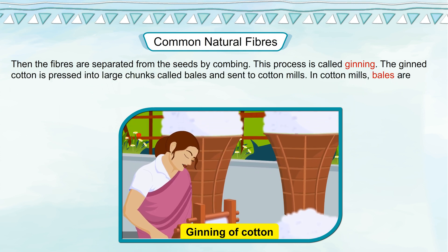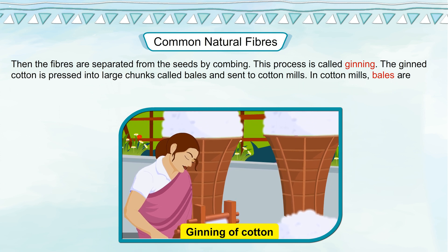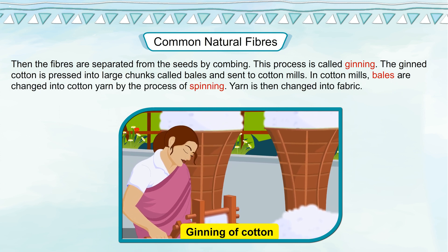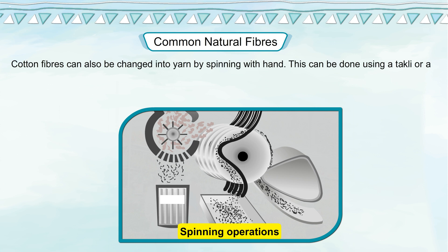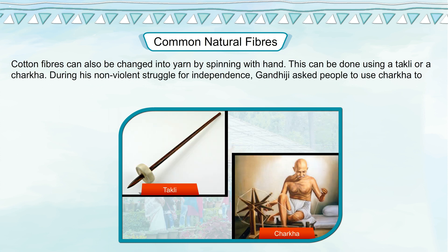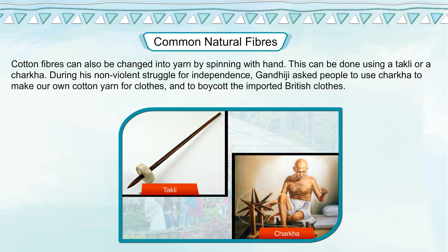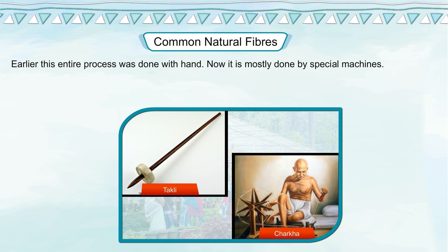The fibers are separated from the seeds by combing — this process is called ginning. The ginned cotton is pressed into large chunks called bales and sent to cotton mills. In cotton mills, bales are changed into cotton yarn by the process of spinning. Yarn is then changed into fabric. Cotton fibers can also be spun into yarn by hand using a takli or a charkha. During his non-violent struggle for independence, Gandhiji asked people to use the charkha to make their own cotton yarn for clothes and to boycott imported British clothes. Earlier this entire process was done by hand; now it is mostly done by special machines.